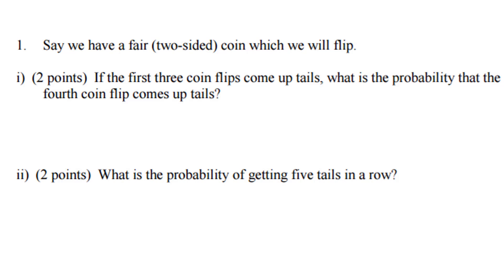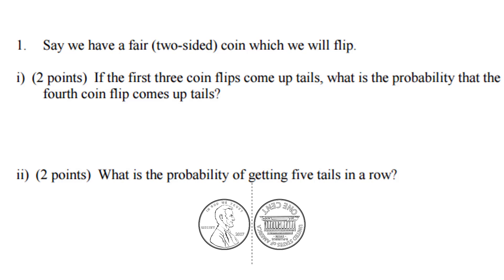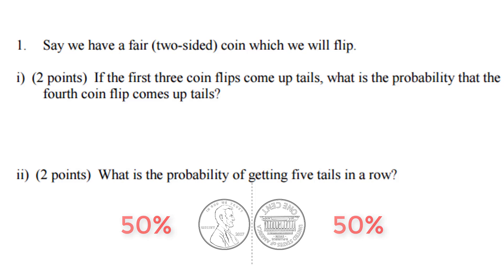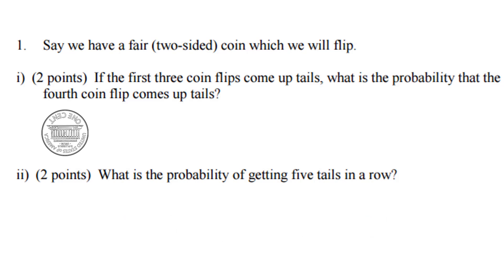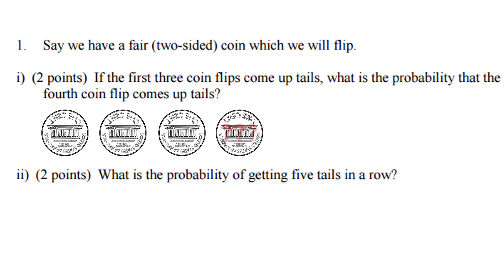For this first question, we're going to look at a two-sided coin and flip it. This is a fair two-sided coin, which means it has a 50% probability of heads and a 50% probability of tails. If the first three coin flips come up tails, what is the probability that the fourth coin flip comes up tails?